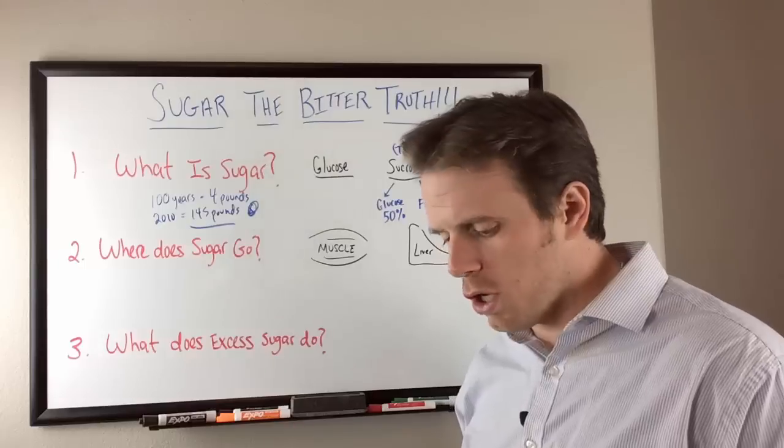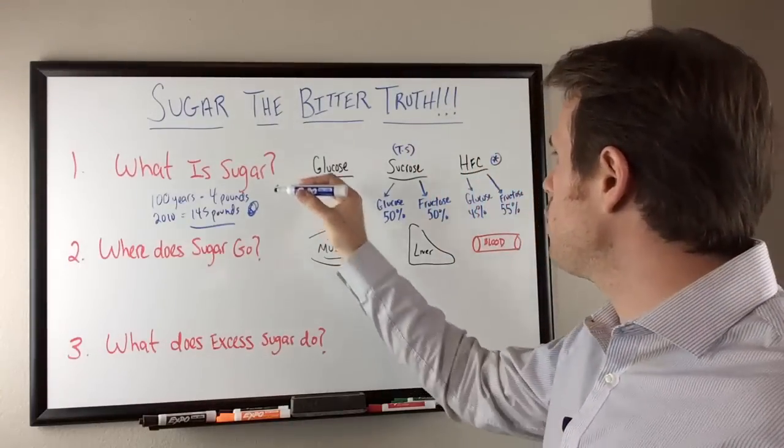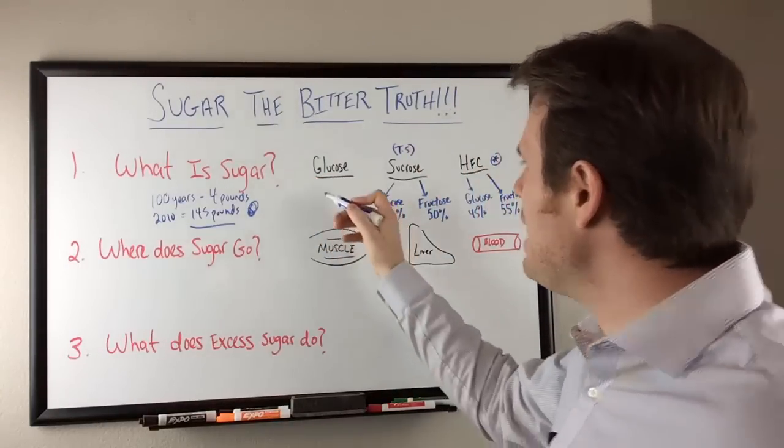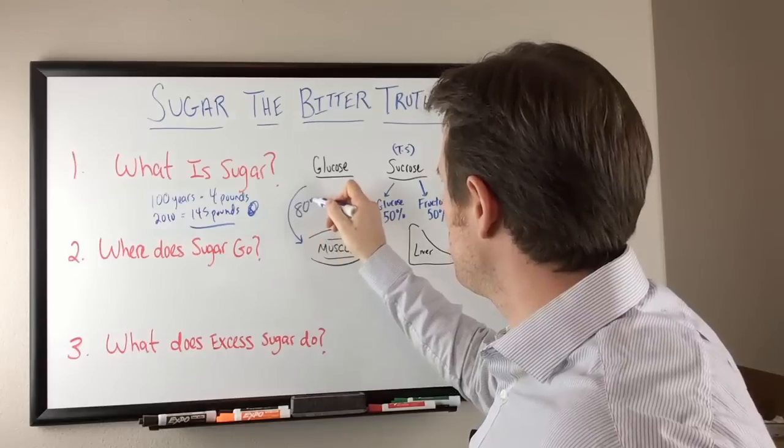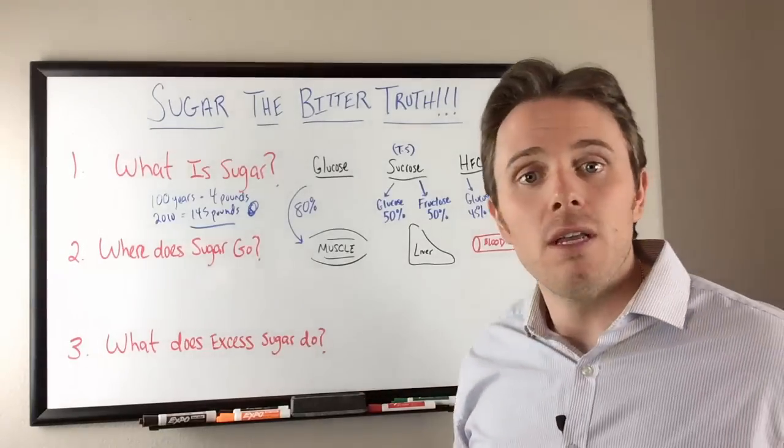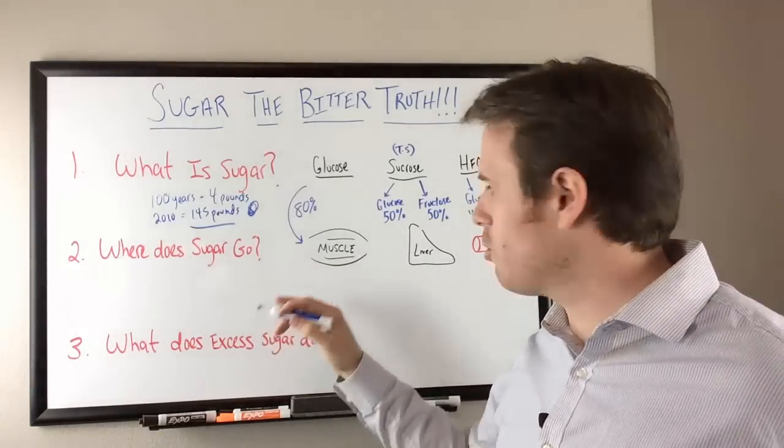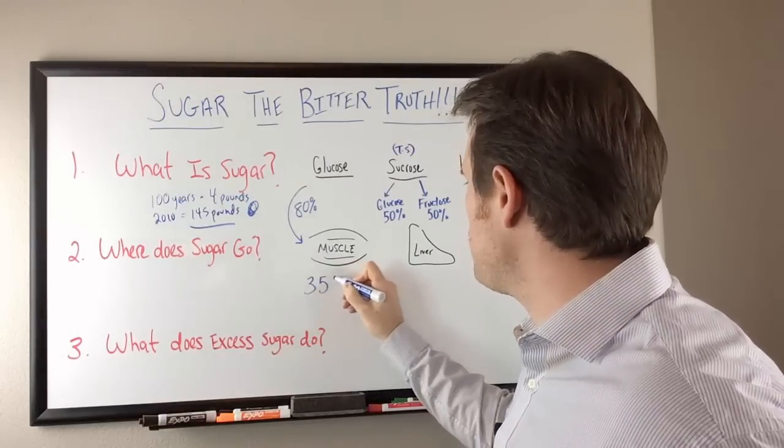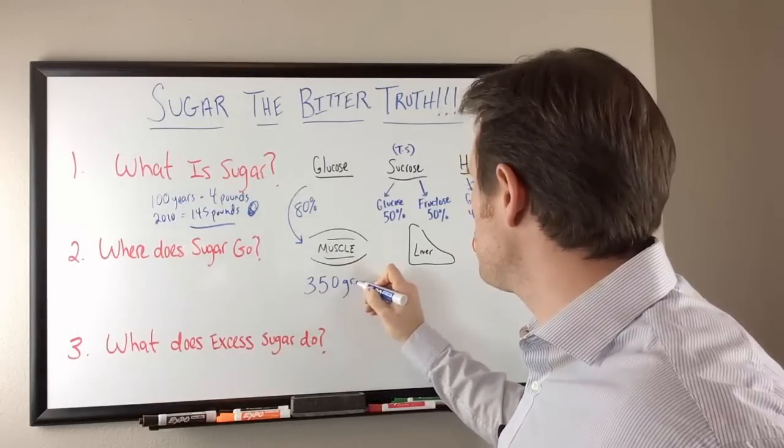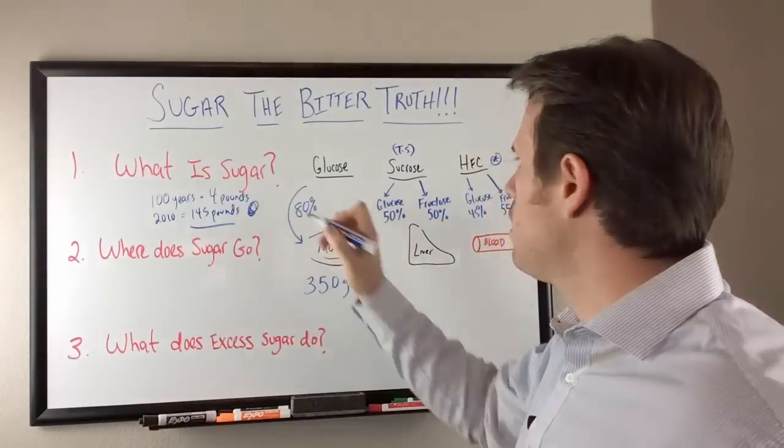So number two, where does sugar go? So first things first, we have glucose. Glucose, about 80% of it goes to the muscle.